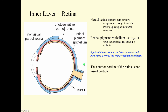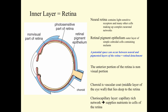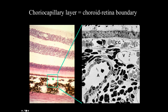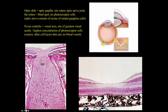The anterior portion of the retina is the non-visual portion. The choroid is a vascular coat, the middle layer of the eye wall, lying deep to the retina. There's a choriocapillary layer — a capillary-rich network in the choroid that supplies nutrients to cells of the retina. The optic disc, or optic papilla, is the blind spot on the eye — the site where the optic nerve joins the retina. There are no photoreceptor cells here. The optic nerve itself contains axons of retinal ganglion cells.